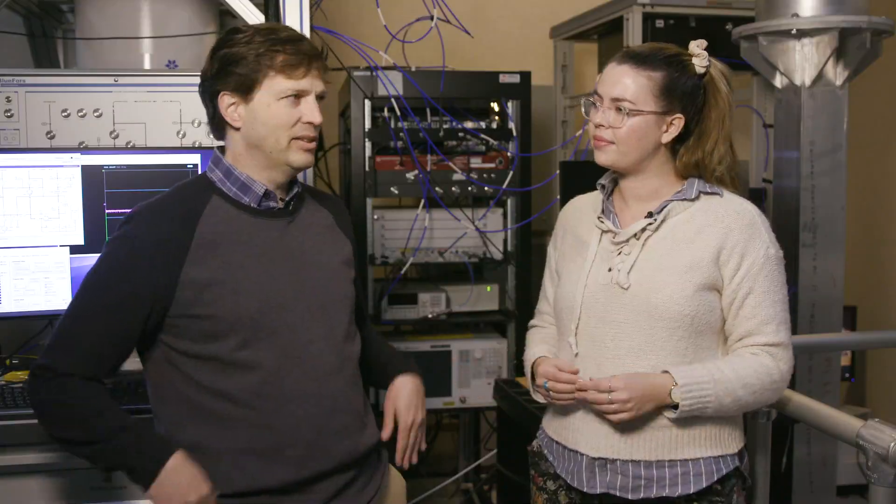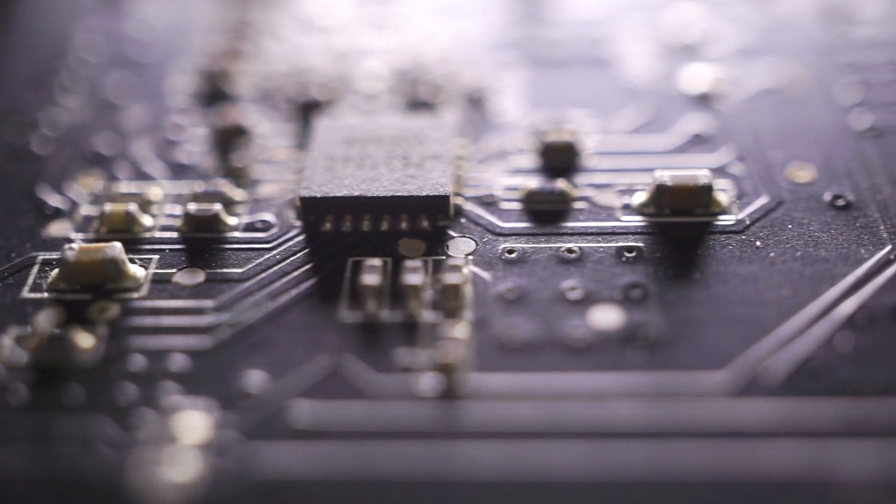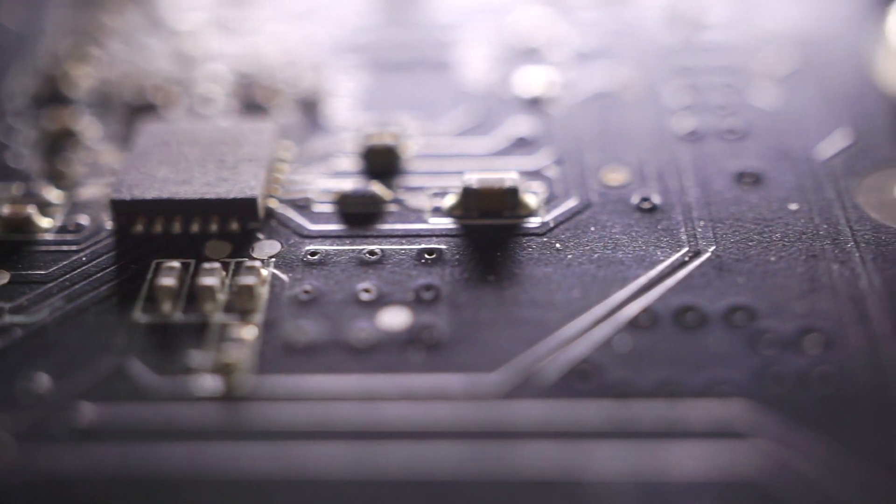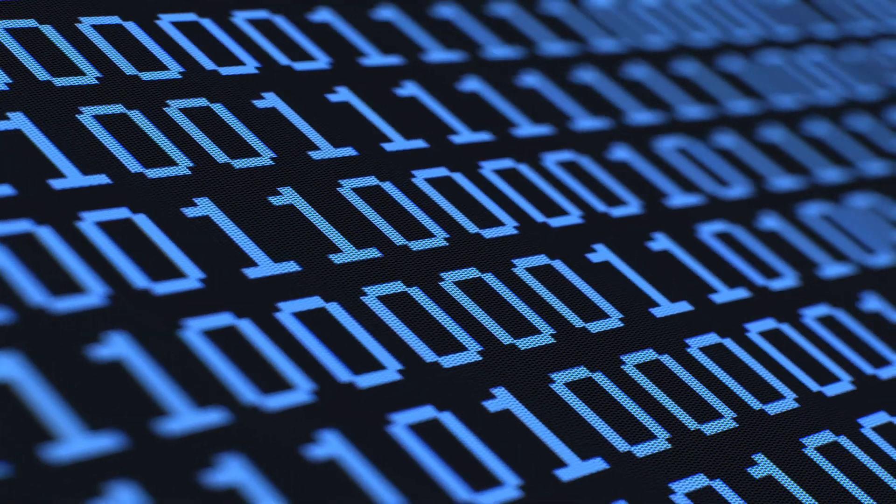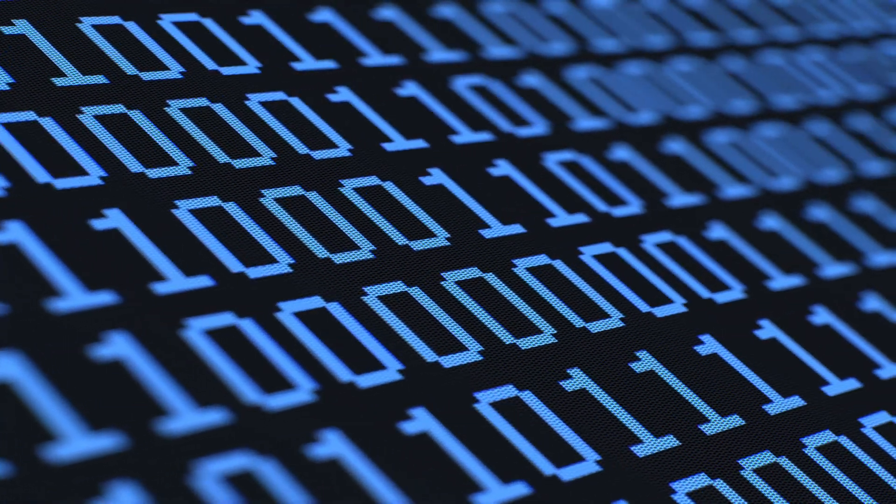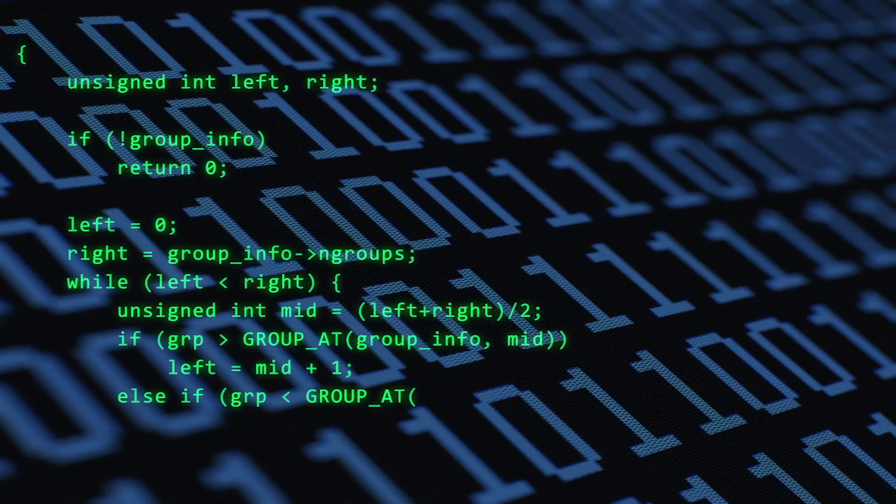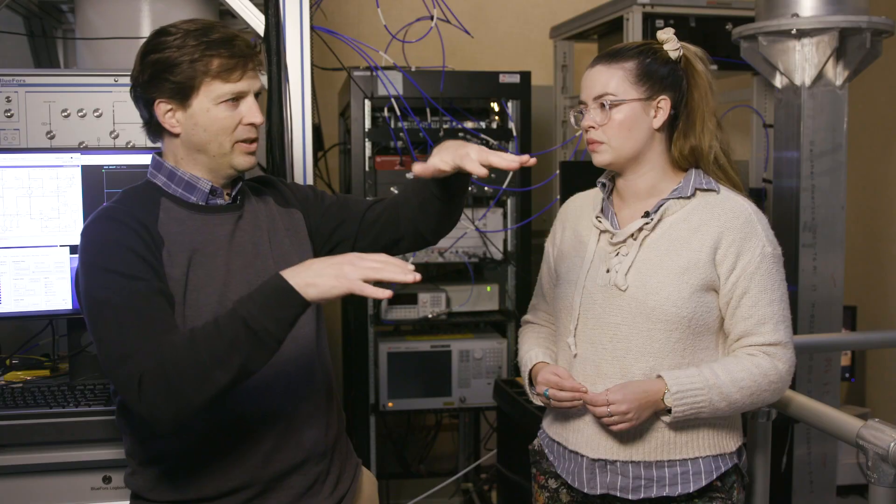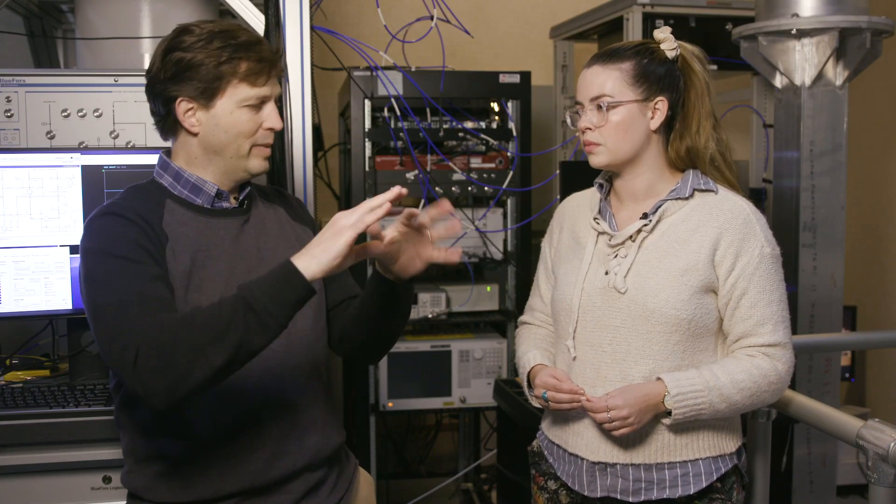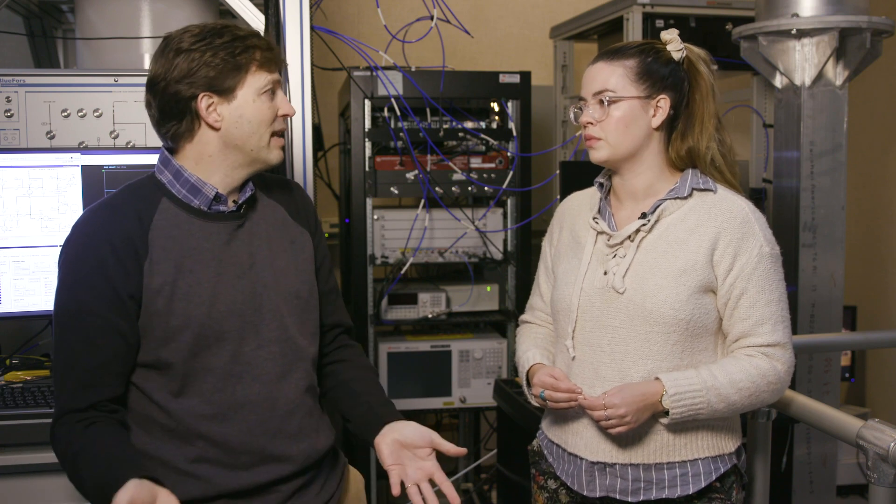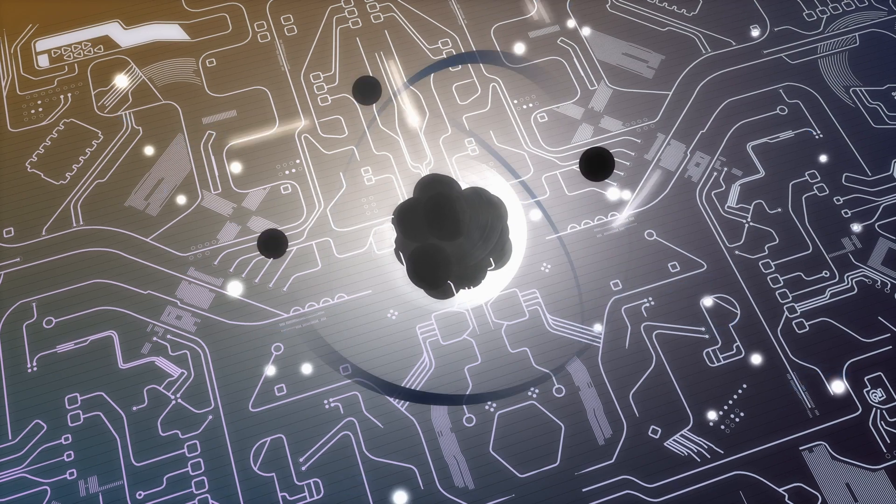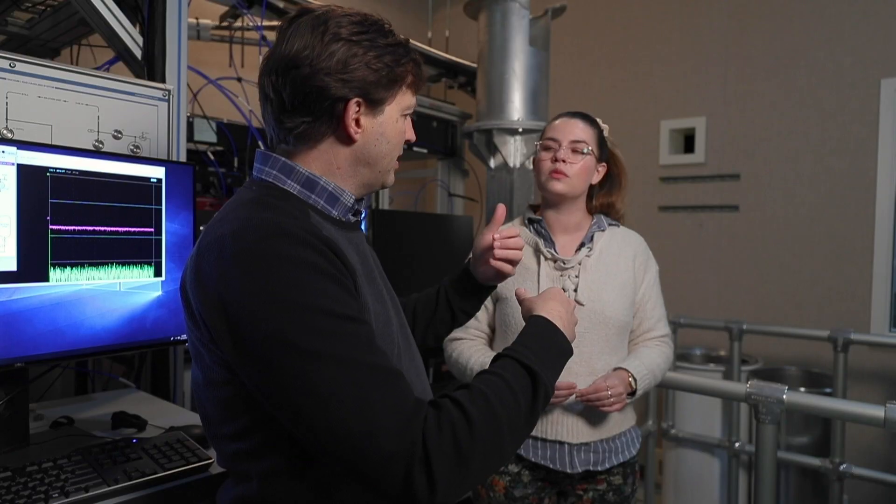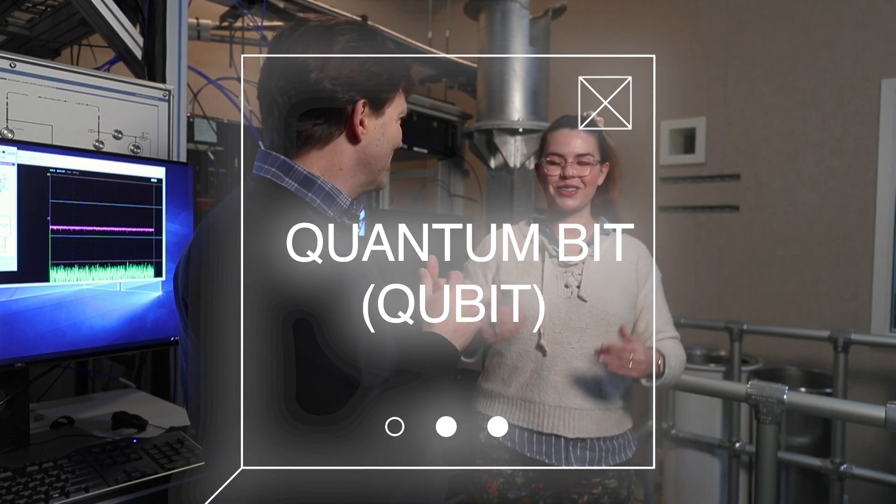So classical computers work with digital logic, most of them, which means that you express everything in terms of bits that are zeros and ones, and you manipulate those with what are called logic operations. And that's the basis of a program. So you have some input bits, you manipulate them, you get some output bits, and that's your answer. And the magic of a quantum system is that you can have an analogous thing, but instead of a bit, you have what's called a quantum bit. A qubit. A qubit. That's right. Sounds really cute.